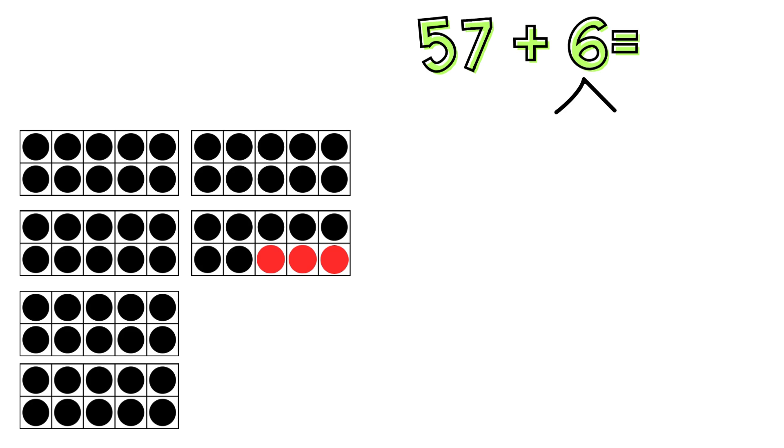Right now, put that 3 in the number bond. Now, we were supposed to add 6. So far, we've added 3. How many more do we need to add? We need to add 3 more. So we broke up the 6 into 3 and 3. Make sure you put the 3 we just added into your number bond.